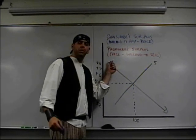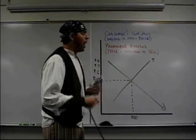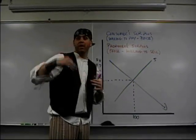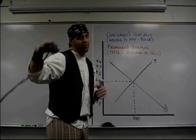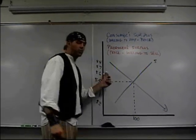Producer surplus is the other side, but it's for sellers. I'm going to sell something for $100, I sold it for $150, then I made $50 producer surplus.